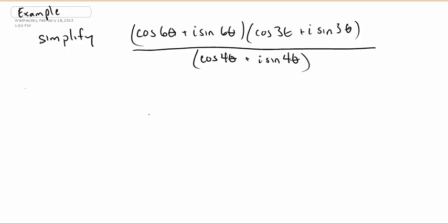This first complex number, the modulus of it is 1. So we have 1 e to the i 6 theta times, again, modulus is 1 of the second complex number e i 3 theta over e i to the 4 theta. Now we can simplify this just using laws of exponents. We add when we multiply common bases and we subtract when we divide the same bases. So in the numerator, we have e to the i 9 theta over e to the i 4 theta, and subtracting, we get e to the i 5 theta.